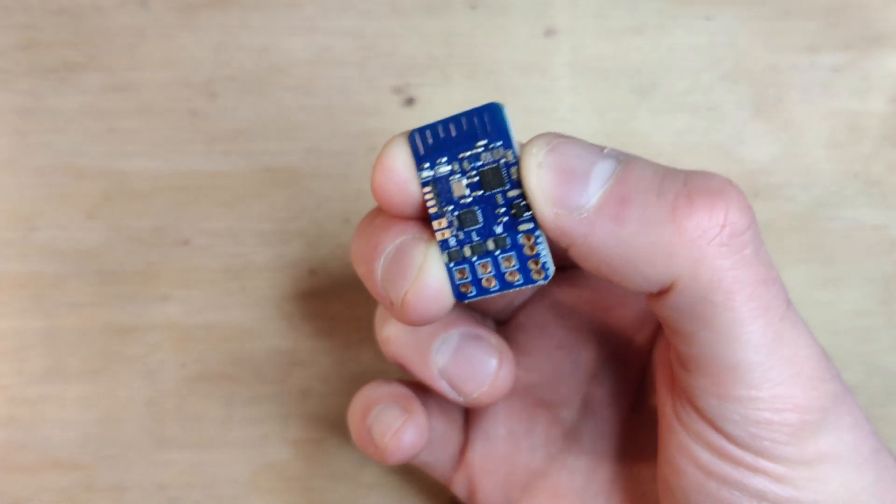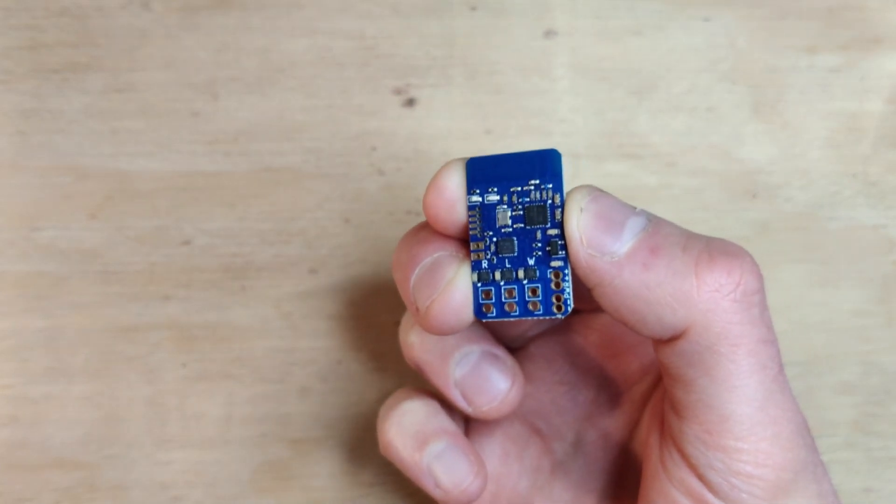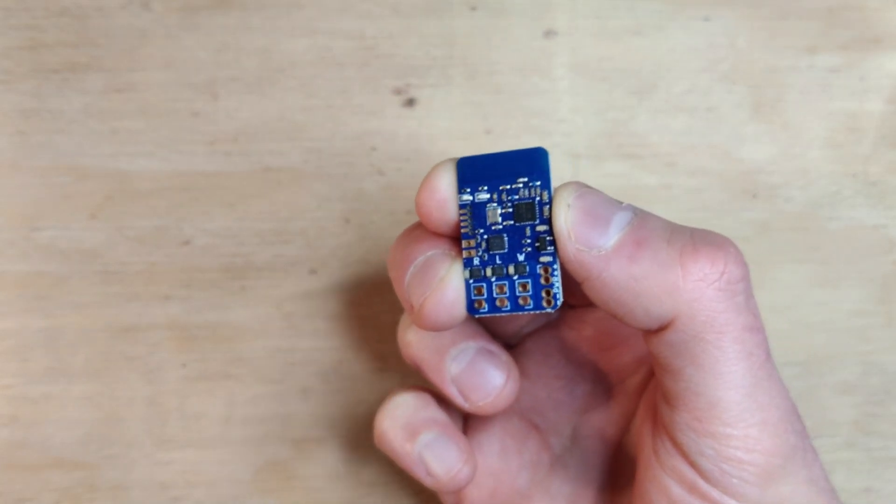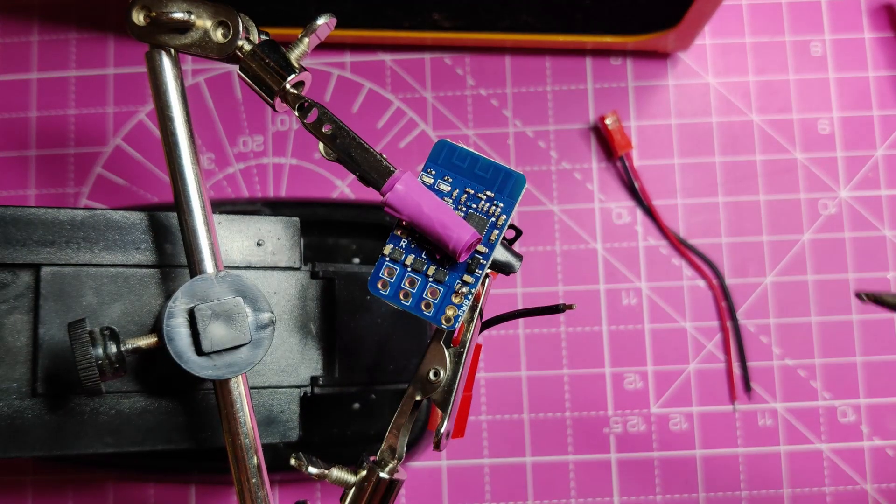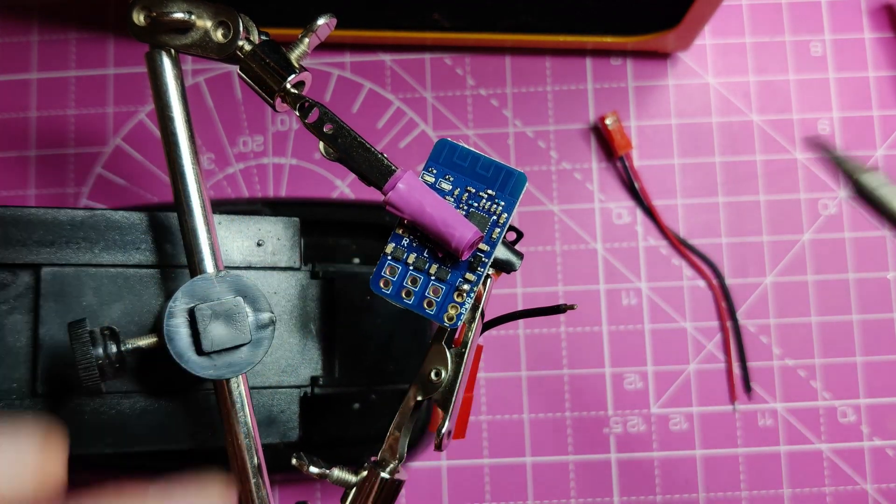The brains of the operation is the Malenki Nano, this glorious little all-in-one motor drive and receiver, which makes packaging so much simpler. The Malenki is an incredible piece of kit. It's also open source, with all the PCB designs and firmware available online for free.